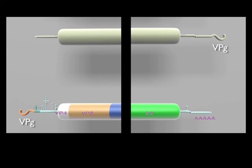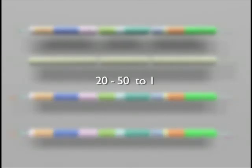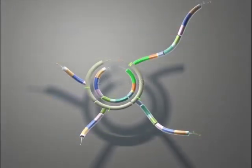But most importantly, it explains the observed asymmetry between minus and plus strands in poliovirus infected cells. The ratio of plus to minus strands has been found to be between 20 and 50 to 1. Each minus strand serves as template for the synthesis of many plus strands.